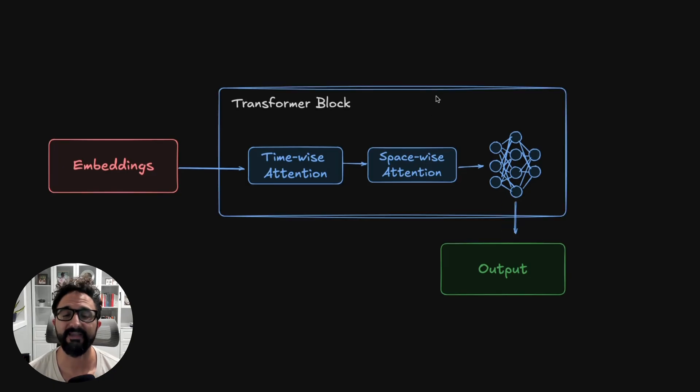Then this will produce our final output. This right here is our transformer block. It can be repeated many times, and this is what we're going to dive into today: how do we get these embeddings in time series data and then how do we compute this timewise and spacewise attention? How is it different from regular attention in a large language model?